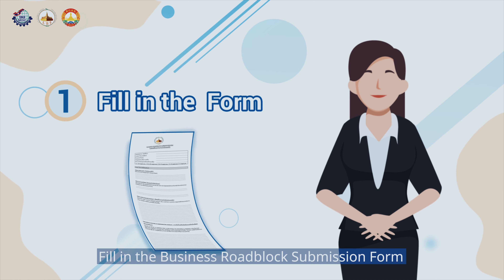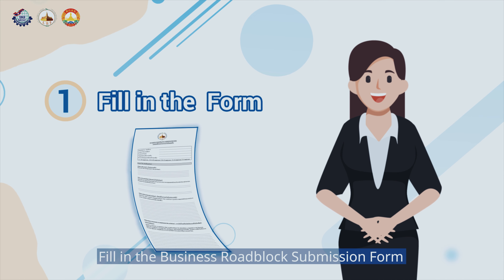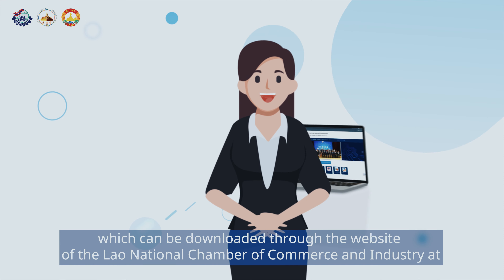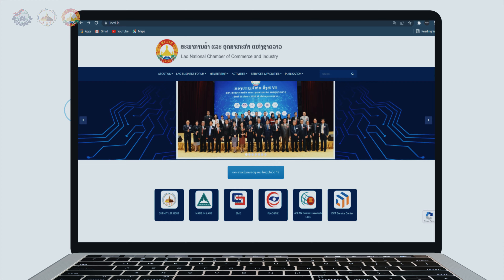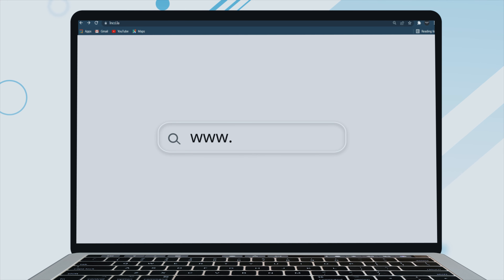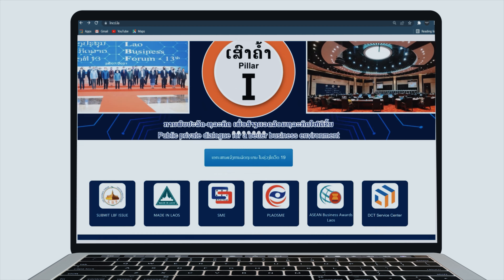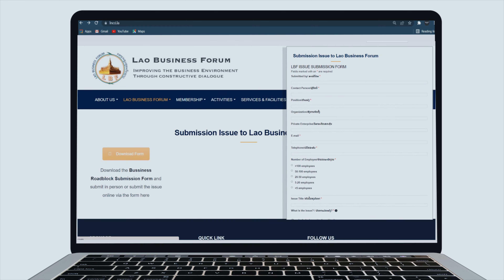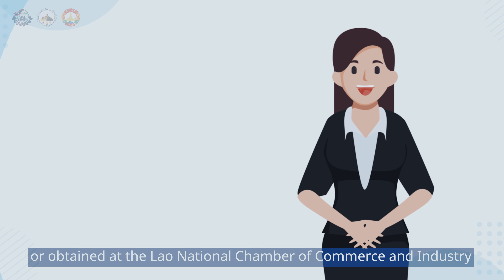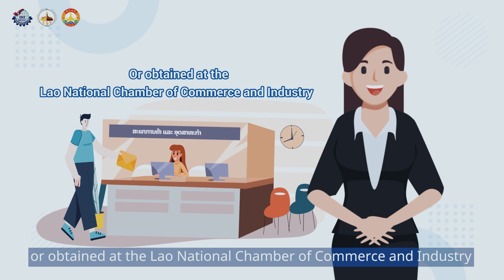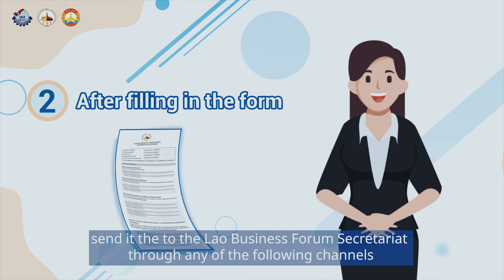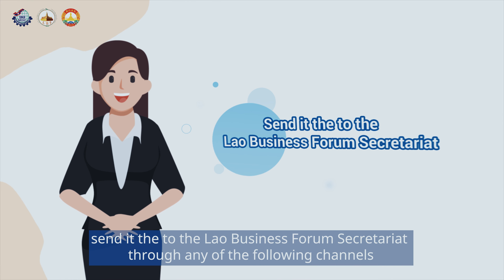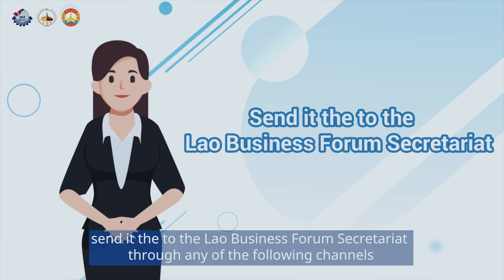Step 1: Fill in the Business Roadblock Submission Form, which can be downloaded through the website of the Lao National Chamber of Commerce and Industry at www.lncci.la, or obtained at the Lao National Chamber of Commerce and Industry. Step 2: After filling the form, send it to the Lab Business Forum Secretariat through any of the following channels.